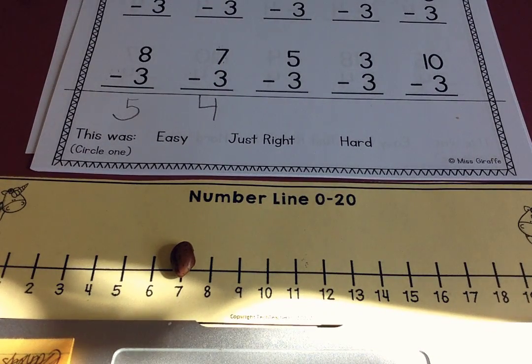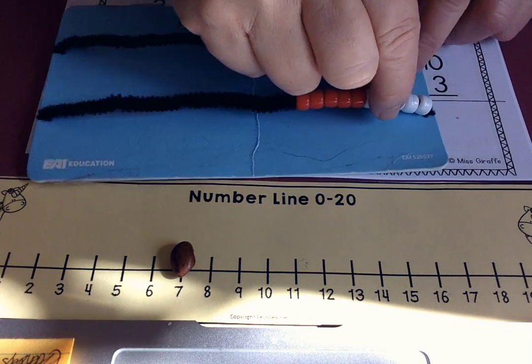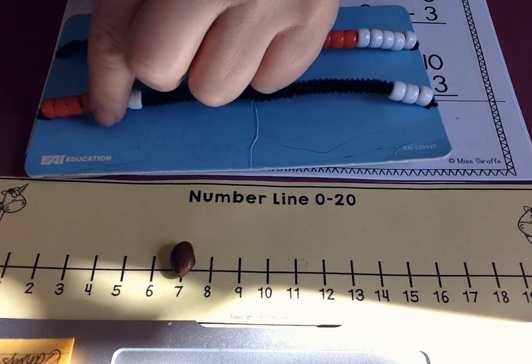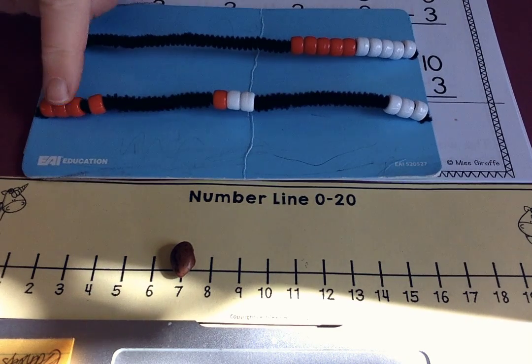Not sure? Let's check it with our math rack. Move over seven and then take away three. That leaves one, two, three, four.